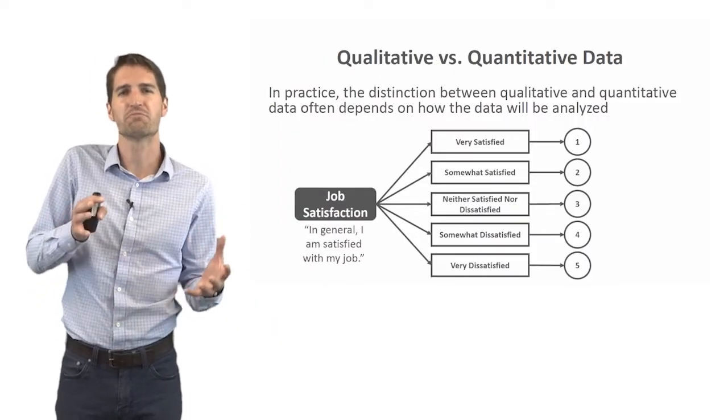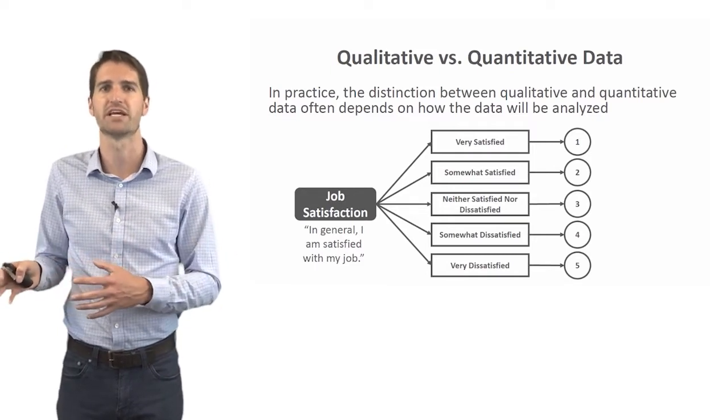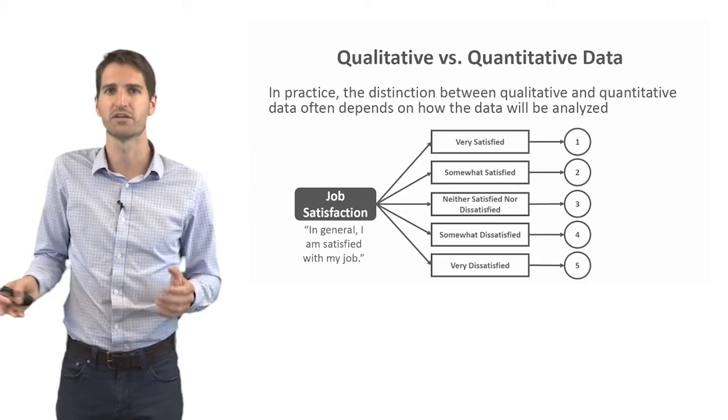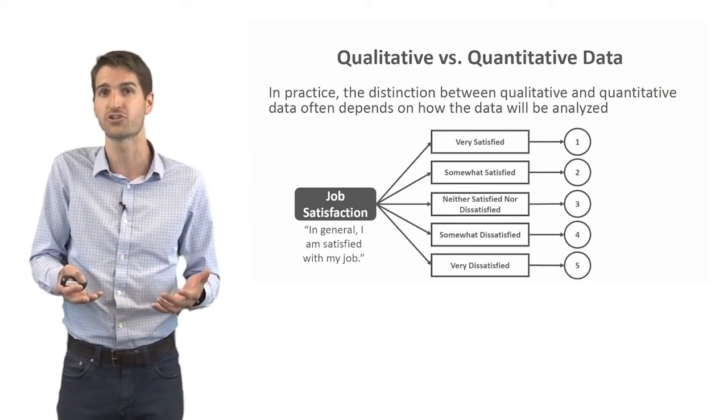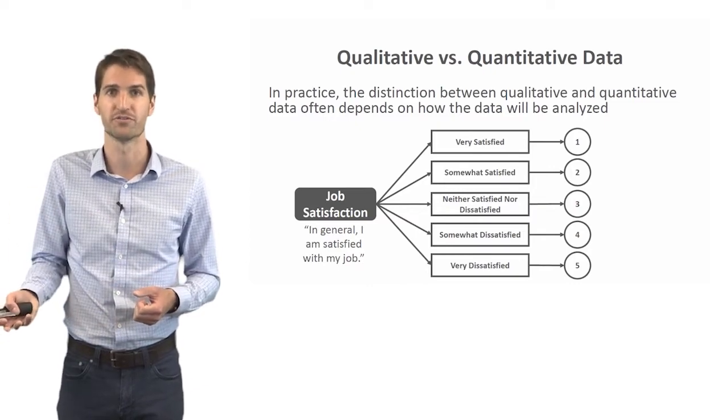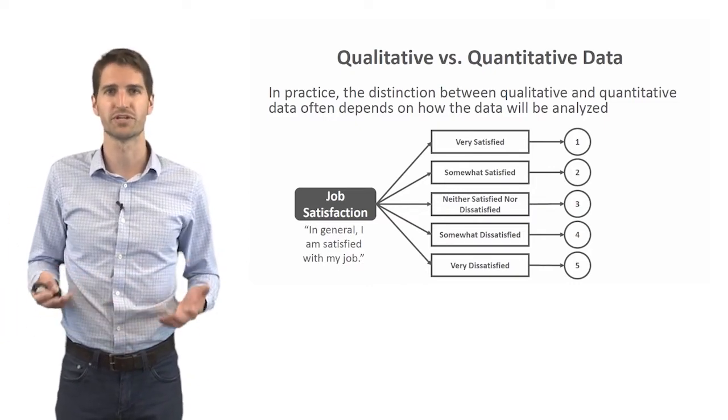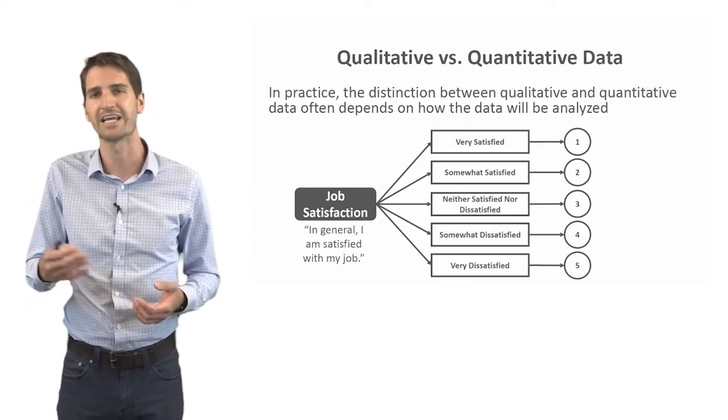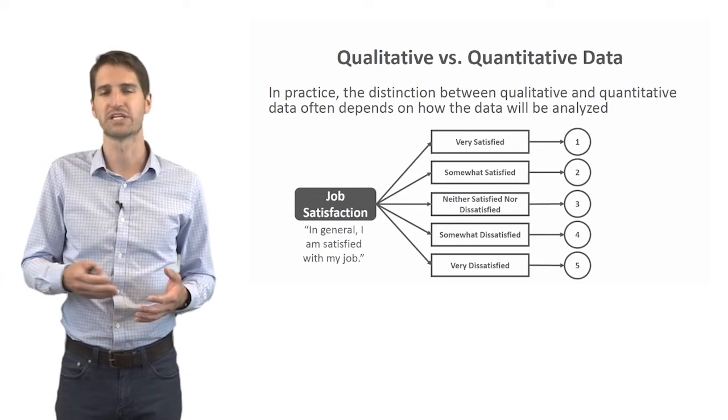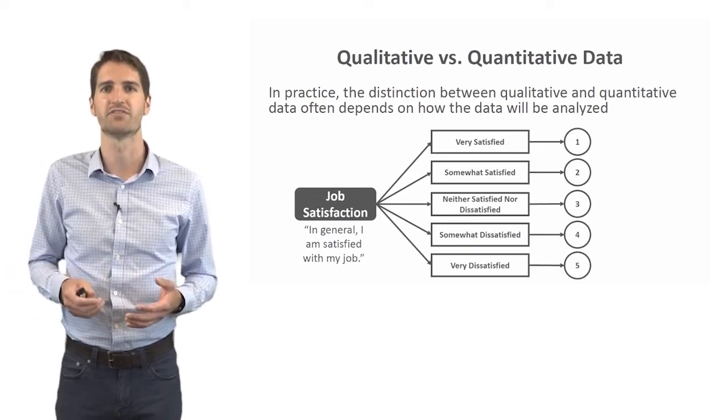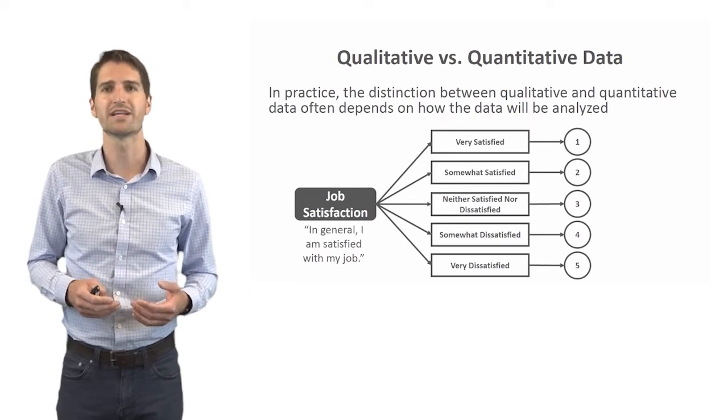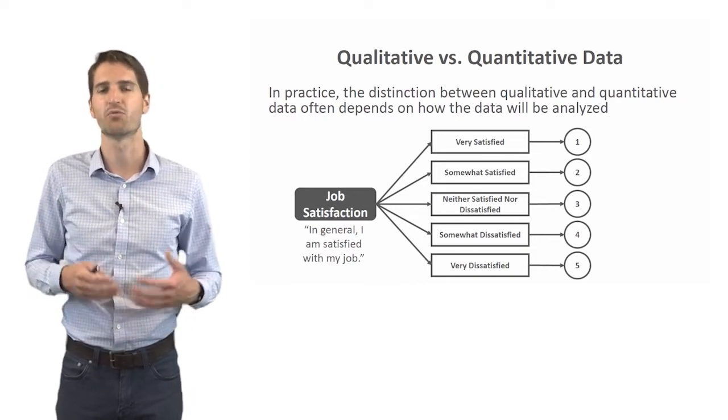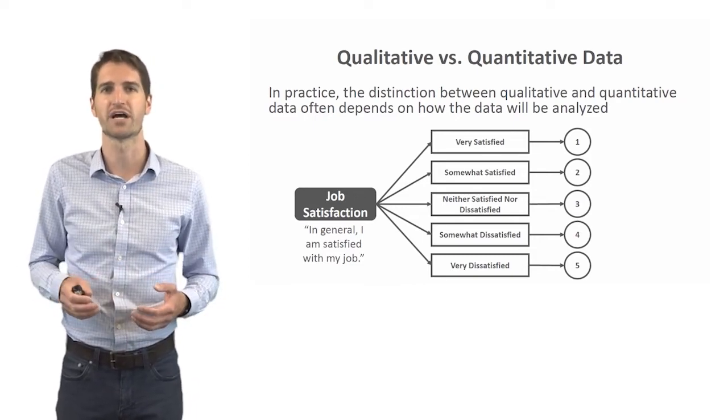So in practice, the distinction between qualitative and quantitative data is not always so clear. And in fact, sometimes we do make that transition very quickly from something that is actually inherently qualitative in nature that then we apply numeric properties to. So let's take the example of an employee survey. And let's assume we are surveying employees using a number of different survey items or questions in which they respond to using a Likert-type scale that ranges from very satisfied to very dissatisfied. And we're trying to tap into the concept or construct that is job satisfaction. So let's imagine the item that we're interested in is a job satisfaction item.